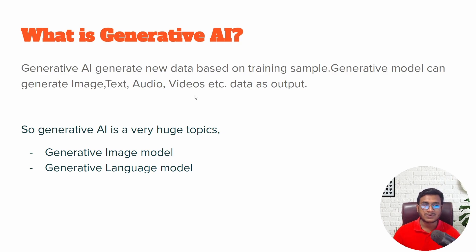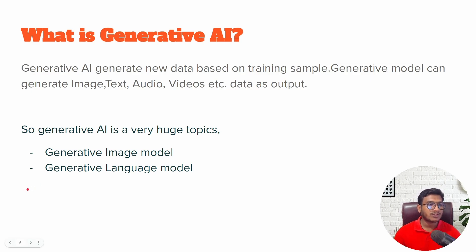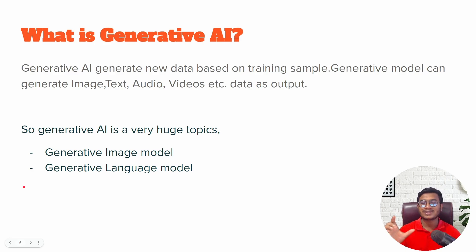Inside Generative AI, we don't only work with text — we also work with images, videos, and audios. All unstructured data can be used. That's why Generative AI is a very huge topic. Inside Generative AI, we have a generative image model as well as a generative language model. For audio, we also have a generative audio model, but at the end we convert audio to text representation — that means language representation. Audio is nothing but frequency, and from the frequency we can convert to textual representation.